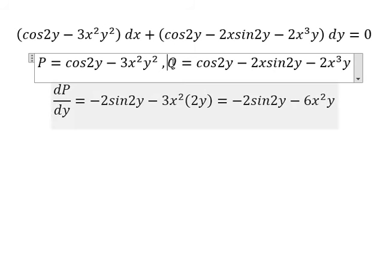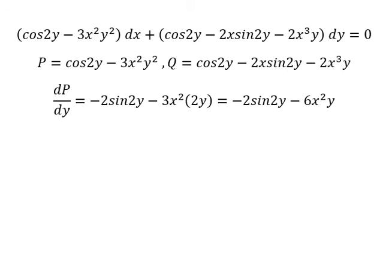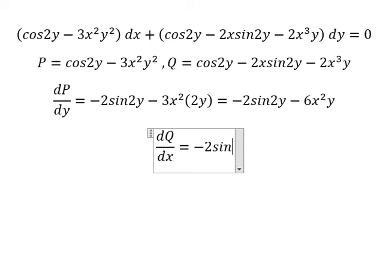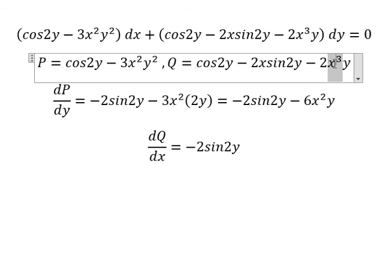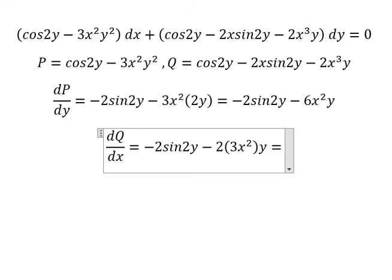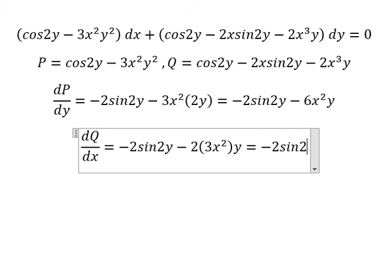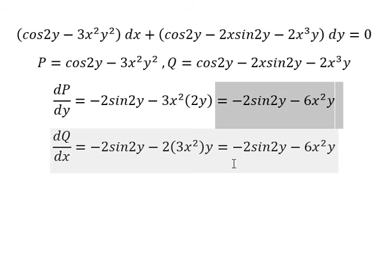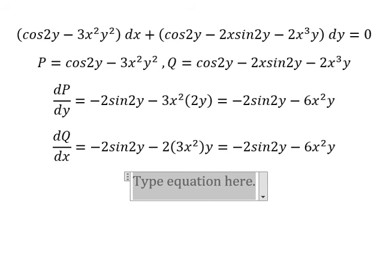That means we need to do the first derivative of Q with respect to x. This term has no x, so we get zero. This term has x, so we get one. This term gives 3x squared. So we have negative 2 sin(2y) minus 6x squared y, and we see that this is the same. So we can say that the equation is exact.